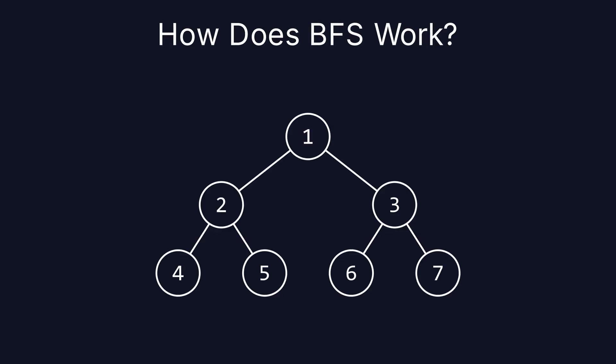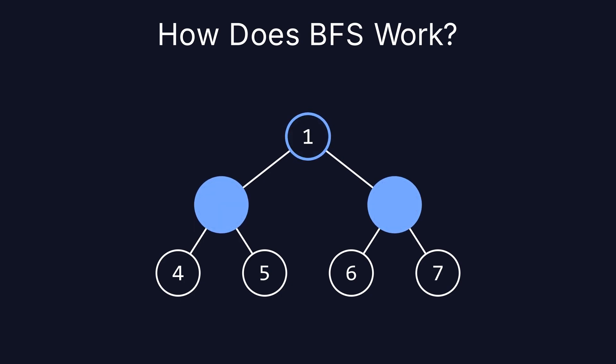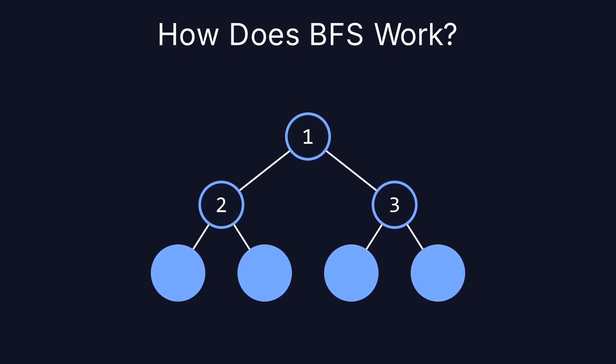BFS starts at the root and explores all nodes at the present depth level before moving on to the next level. In this tree, BFS would visit nodes in the order 1, 2, 3, then 4, 5, 6, and 7. This approach is great for finding the shortest path in unweighted graphs.